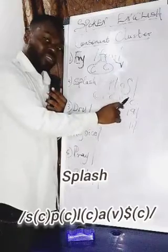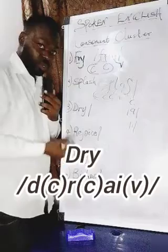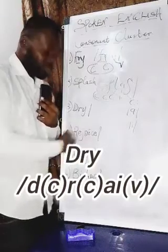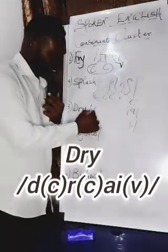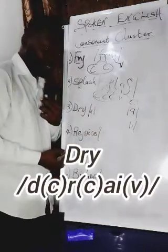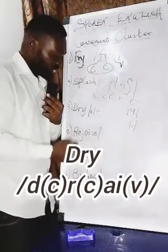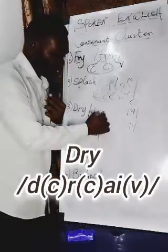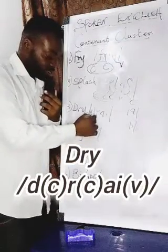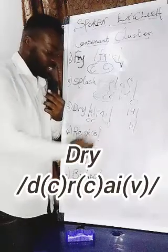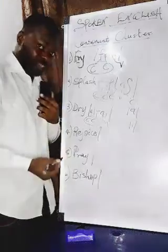Now we move to number three — the word 'dry.' What sounds make up 'dry'? We have the first sound, a plosive consonant; then 'r,' a gliding consonant; and then the diphthong vowel. So we have: consonant, consonant, then vowel. The consonant cluster in 'dry' is therefore between the plosive and the 'r.'